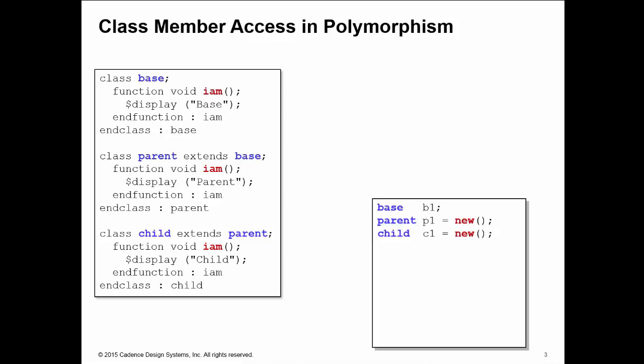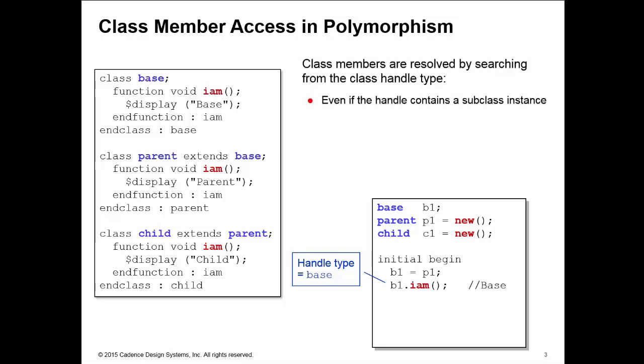I can declare handles on these three classes. I create an instance of parent in the handle P1 and an instance of child in the handle C1. As we saw in the previous byte on polymorphism, I can take that parent instance from P1 and copy it into the base handle B1. But if I call any methods off B1, these methods are resolved according to the handle type. So B1.im is always executed in the base class, even though B1 contains a pointer to the parent class.